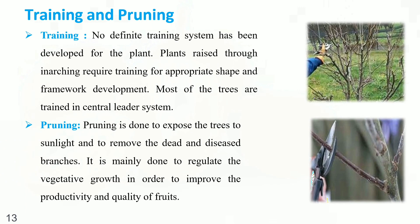Training and Pruning. No definite training system has been developed for the plant. Plants raised through inarching require training for appropriate shape and framework development. Most trees are trained in a central leader system. Pruning is done to expose trees to sunlight and to remove dead and diseased branches. It is mainly done to regulate vegetative growth in order to improve productivity and quality of fruit.